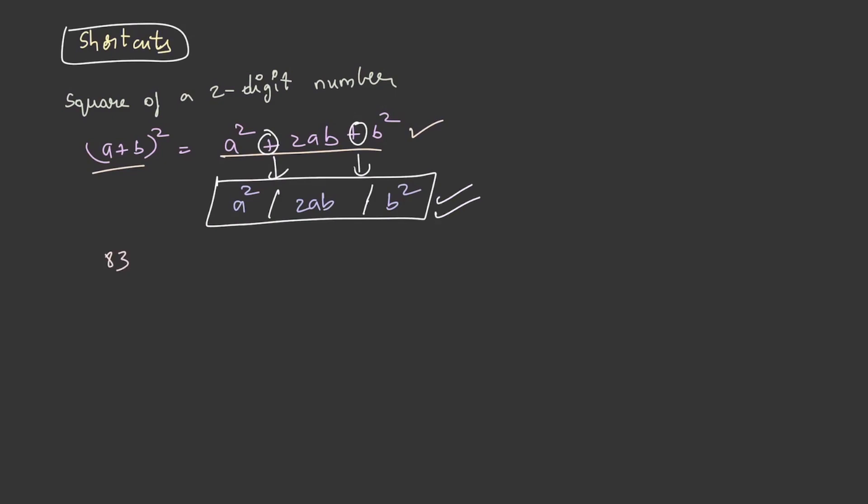Let's take an example of 83, which is a two-digit number. The first step we have to do is take a as 8 and b as 3. And in the second step, we need to substitute these values in the formula, that is 8² / 2 × 8 × 3 / 3². So, this becomes 64, 48, and 9.